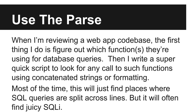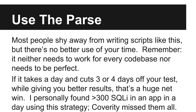When I'm reviewing a large web app, I first look to see how they query their database, then write a little script to find any such call which is passed a formatted string or a concatenation. Generally this will just find places where queries are split across multiple lines, but it'll also find great SQL injection bugs. Most people hesitate to write scripts of this sort, but in my opinion they're the best possible use of your time. It doesn't need to be perfect and it only needs to work on the codebase in front of you. If it takes a day and cuts off three or four, which it can, then that's a big win.